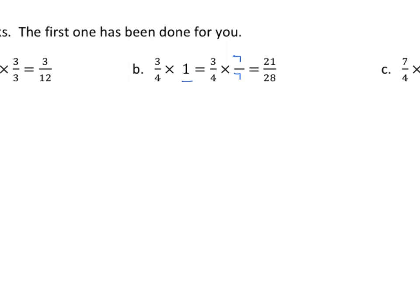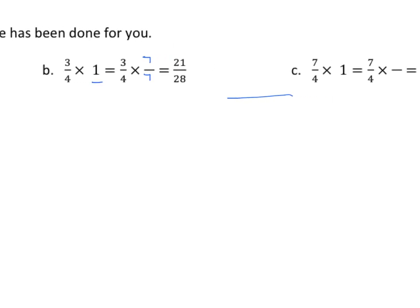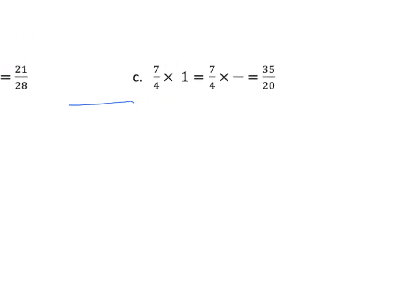Let's do another example. We get 7 fourths times 1, and we have 7 fourths times a fraction equivalent to 1 with the same numerator and denominator, and we want to get 35 twentieths. If I multiply 4 by 5, I get 20, and 7 multiplied by 5 gets 35. So our fraction equivalent to 1 is 5 fifths. We have to multiply the fraction by another fraction that's equivalent to 1, and as long as the numerator and denominator are the same, we'll get an equivalent fraction.